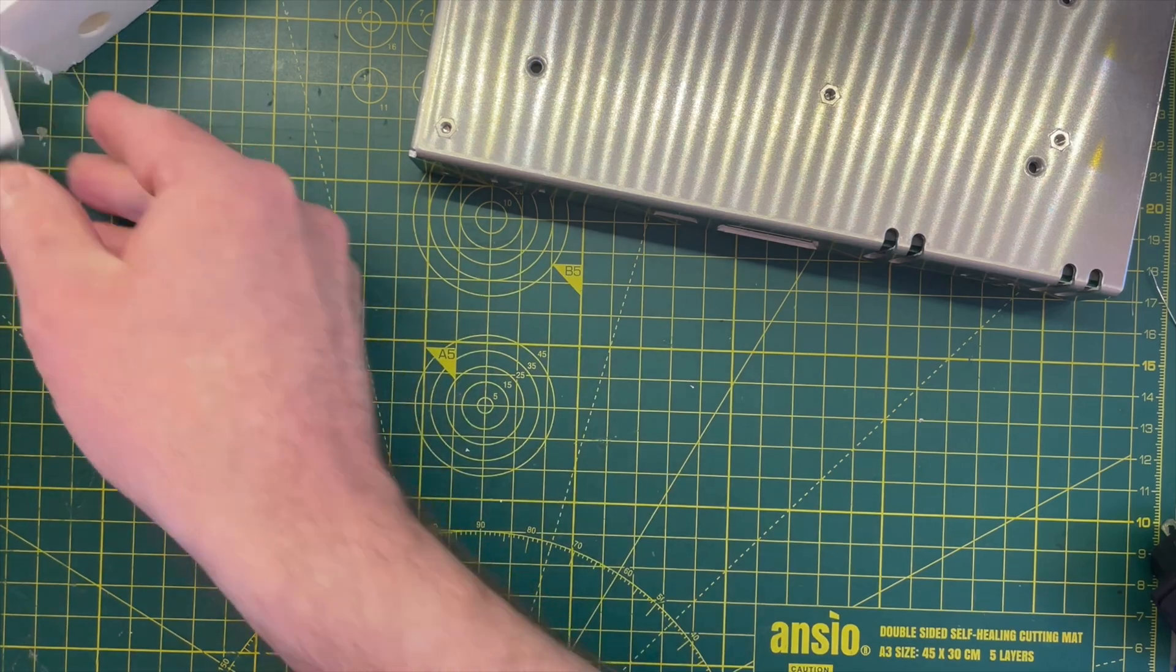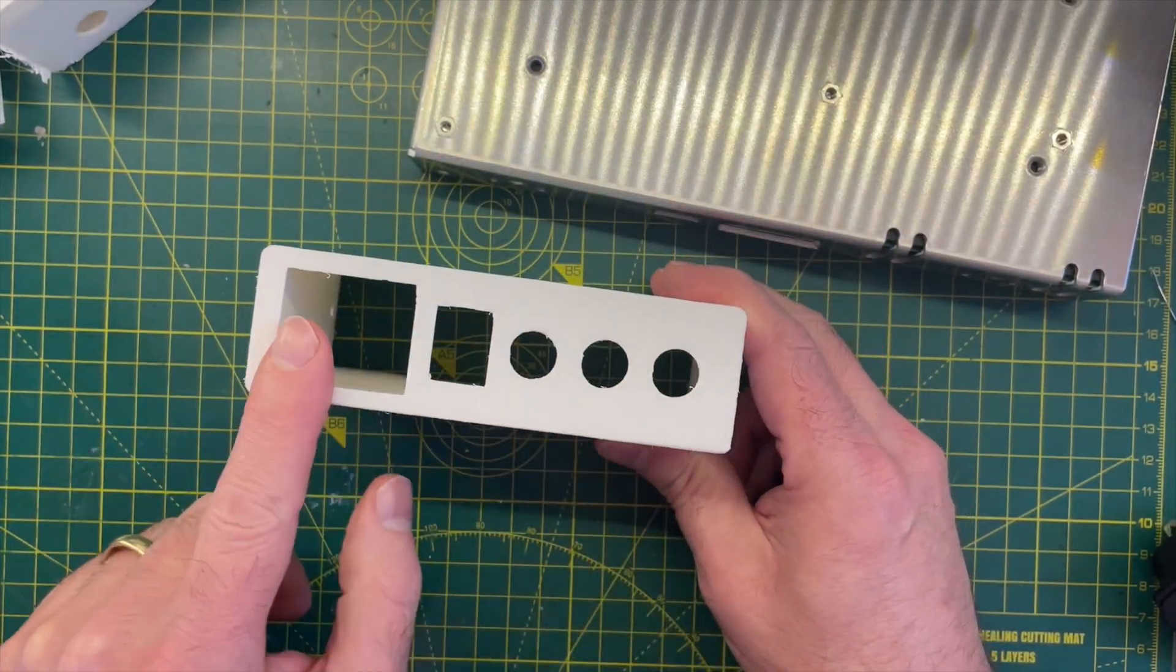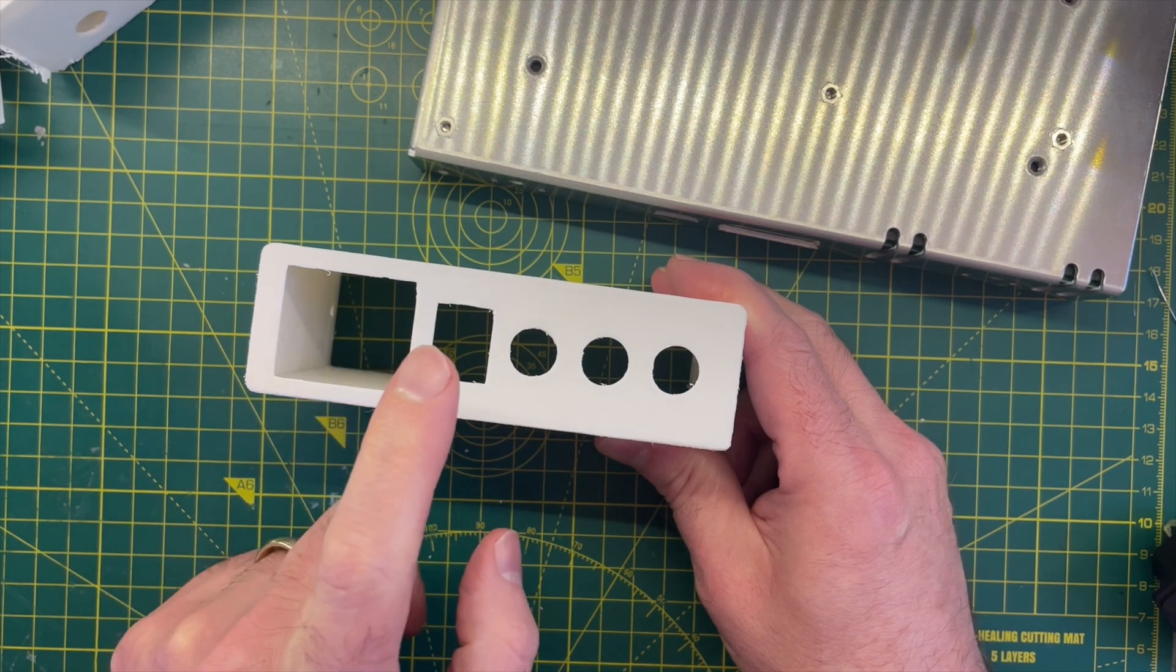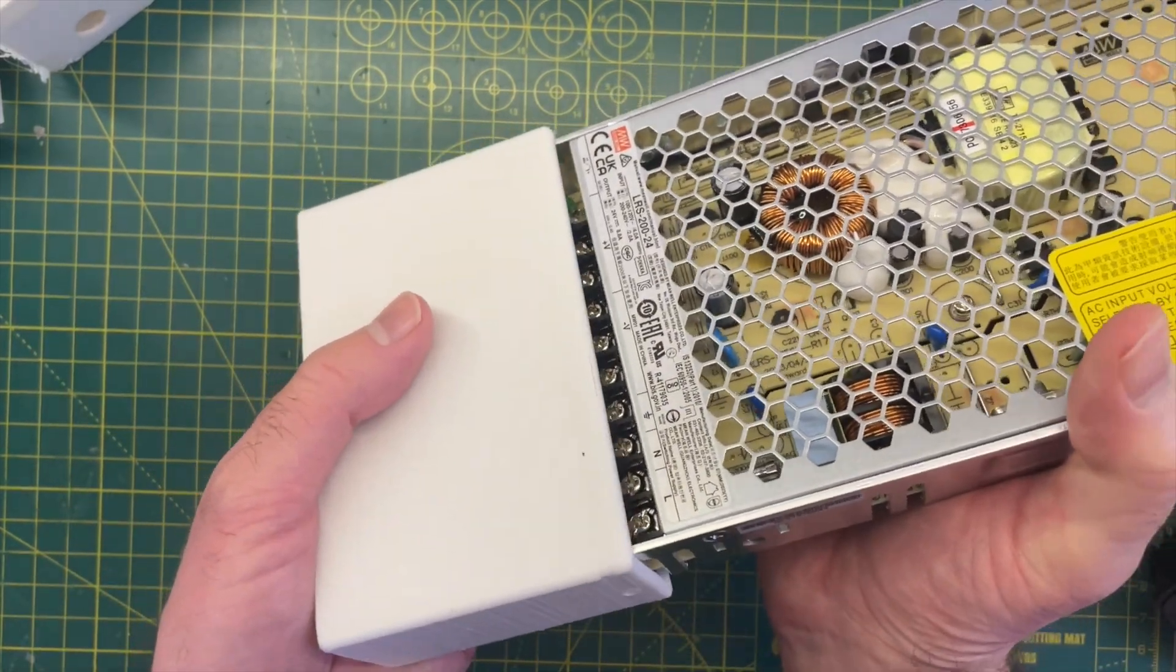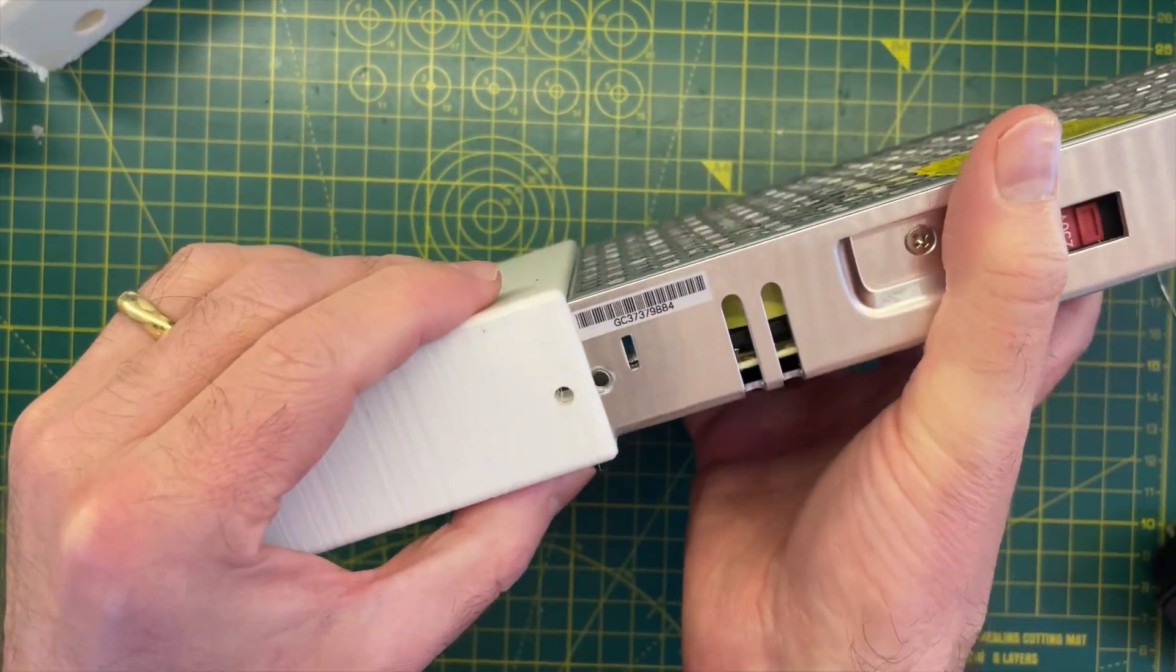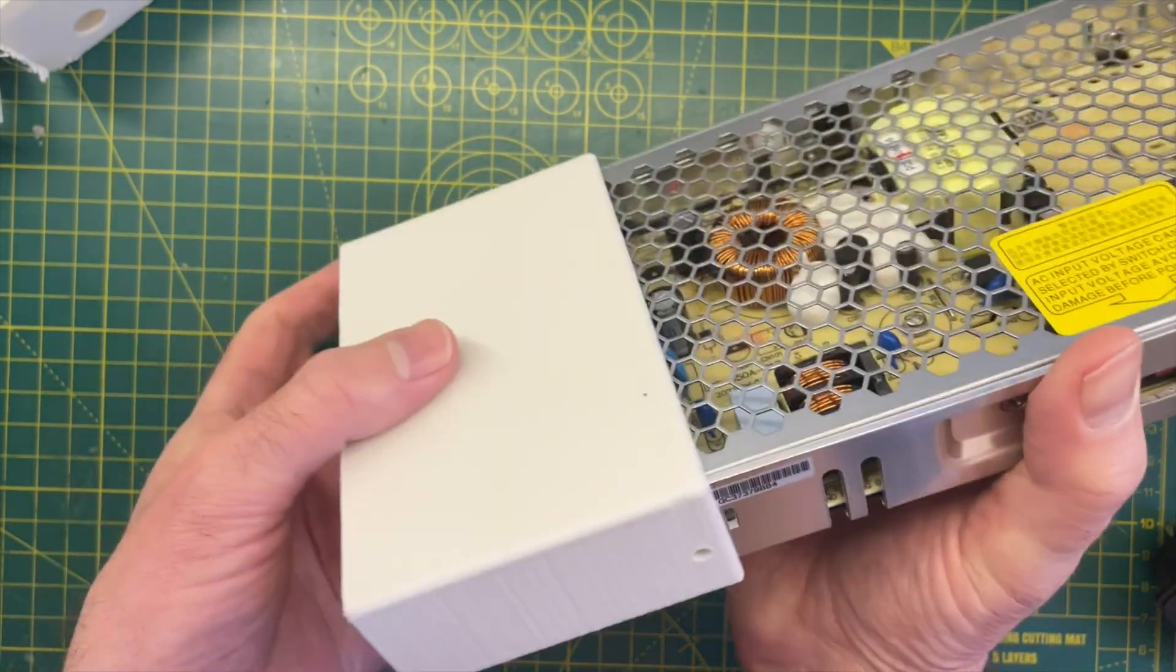So what I've gone for now is this tubular construction. So we have our front panel here for the power connector, the switch, and the outlet sockets, and this will just slide nicely onto the power supply and then we'll just put some small bolts into these holes and screw it into place.